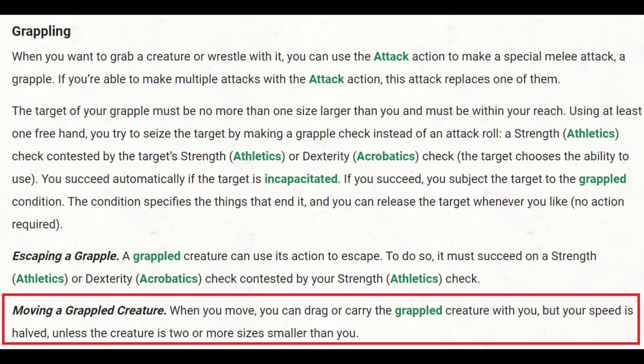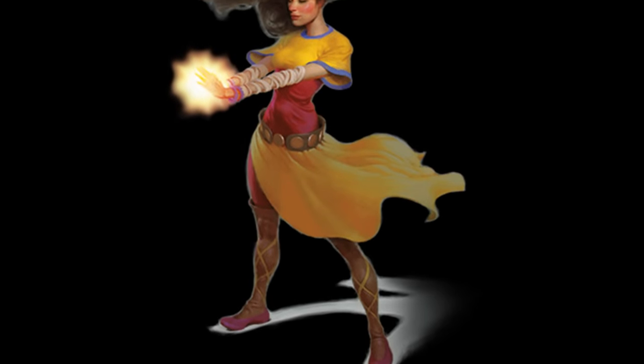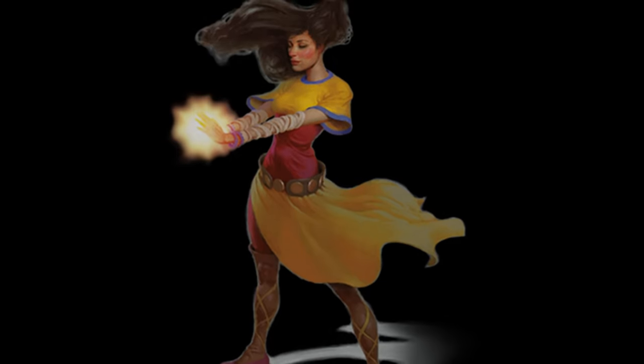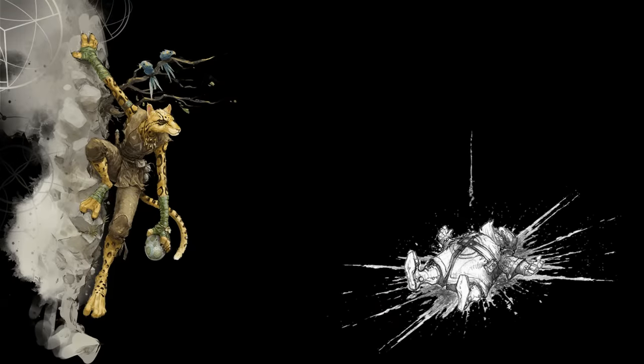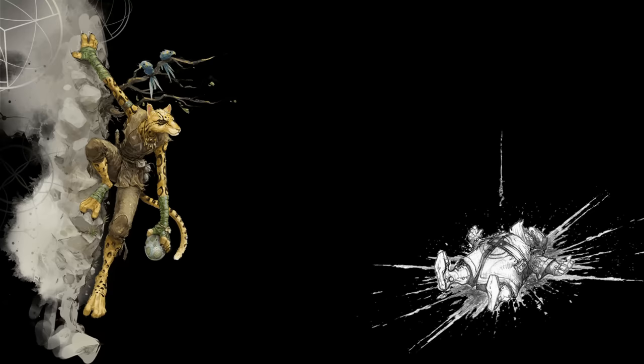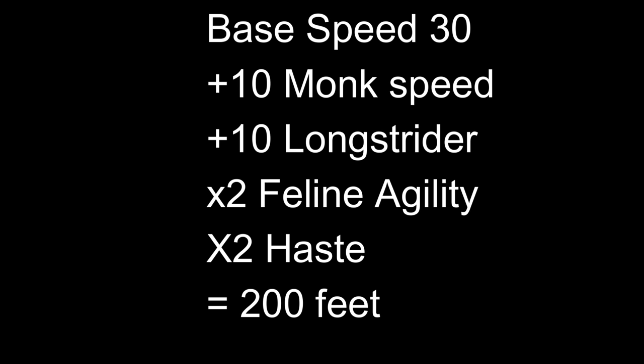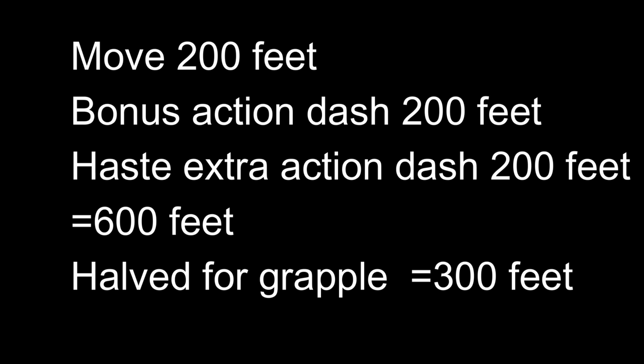Most commonly, I think DMs have the grappler use their own movement to do it. You know what monks have? Lots of movement. And step of the wind is a bonus action to get a lot more. Put a haste spell on this monk, and even with double cost for movement while grappling, that could be a lot of drops. Make them a tabaxi for good measure, and they can double their movement rate. So let's say we have 40, double to 80. Let's give them a longstrider spell, so 50, double to 100. Then we double it again to 200 because of haste, plus a bonus action dash for 400, and then a hasted action dash — now we have 600 movement. We have to halve it for carrying a grappled creature, so we have 300 left.